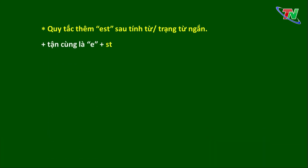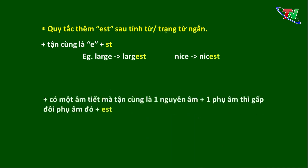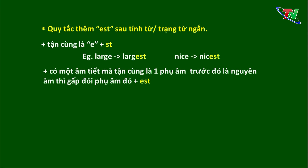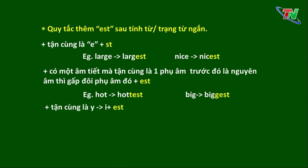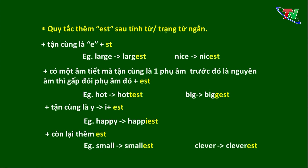Quy tắc thêm đuôi '-est' vào sau tính từ và trạng từ ngắn: 1) Nếu tận cùng là 'e', giữ nguyên và thêm 'st'. Ví dụ: large → largest; nice → nicest. 2) Nếu có một âm tiết, tận cùng là phụ âm mà trước là nguyên âm, gấp đôi phụ âm cuối rồi thêm 'est'. Ví dụ: hot → hottest; big → biggest. 3) Nếu tận cùng là 'y' dài, đổi 'y' thành 'i' rồi thêm 'est'. Ví dụ: happy → happiest. 4) Còn lại chỉ việc thêm 'est': small → smallest; clever → cleverest.